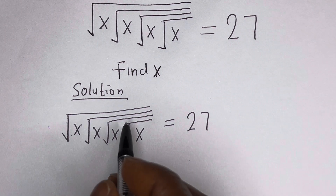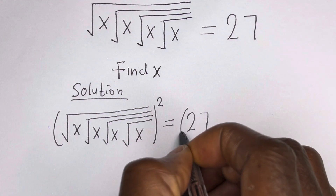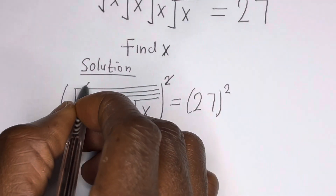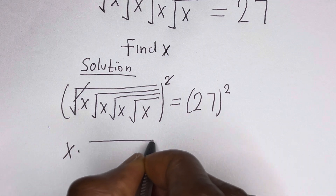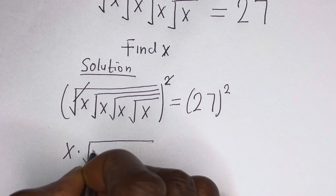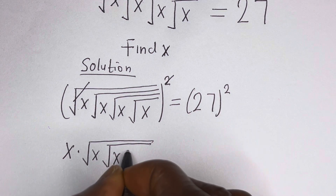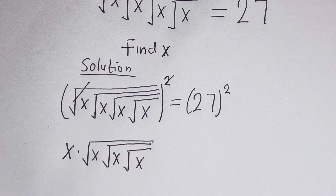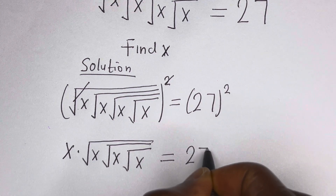Let us take the square of both sides. We square this, and this square cancels this one. We have X multiplied by square root of X, square root of X, square root of X, is equal to 27 squared.